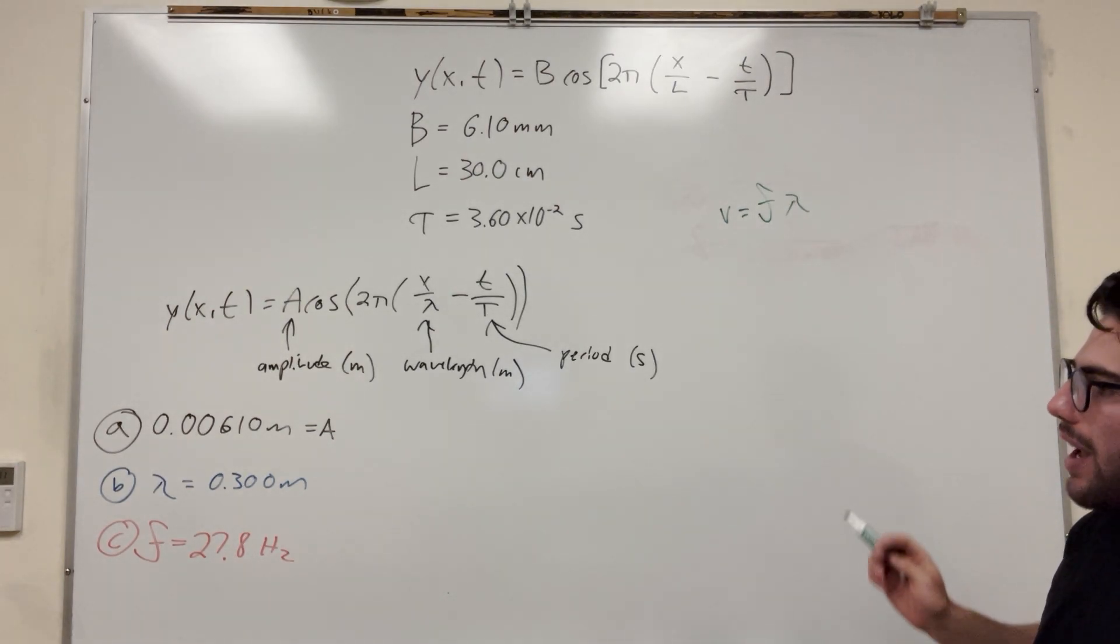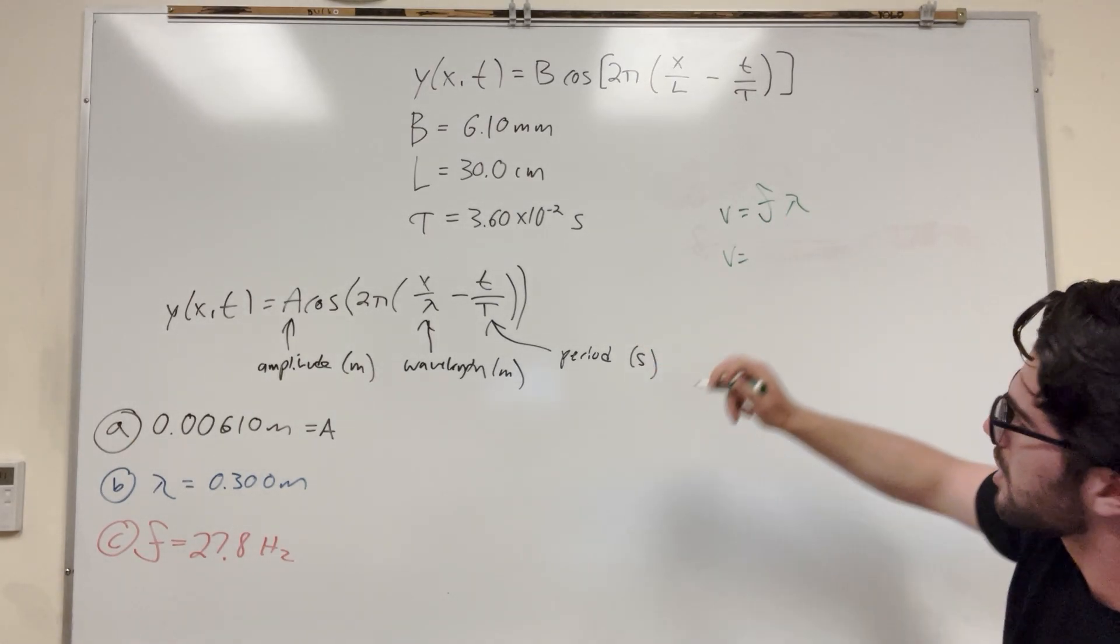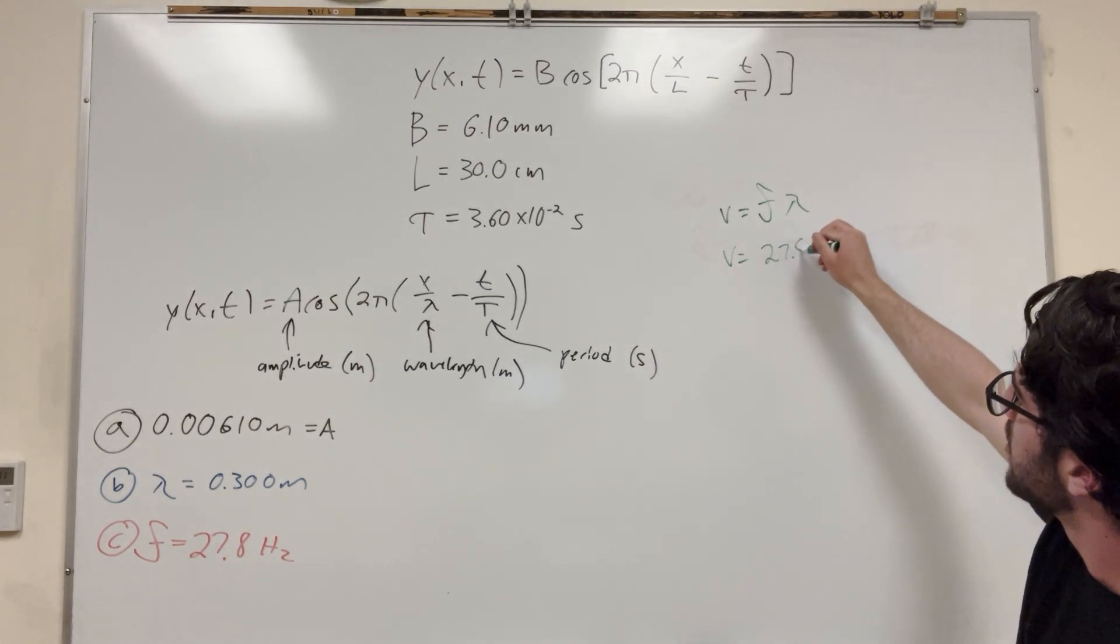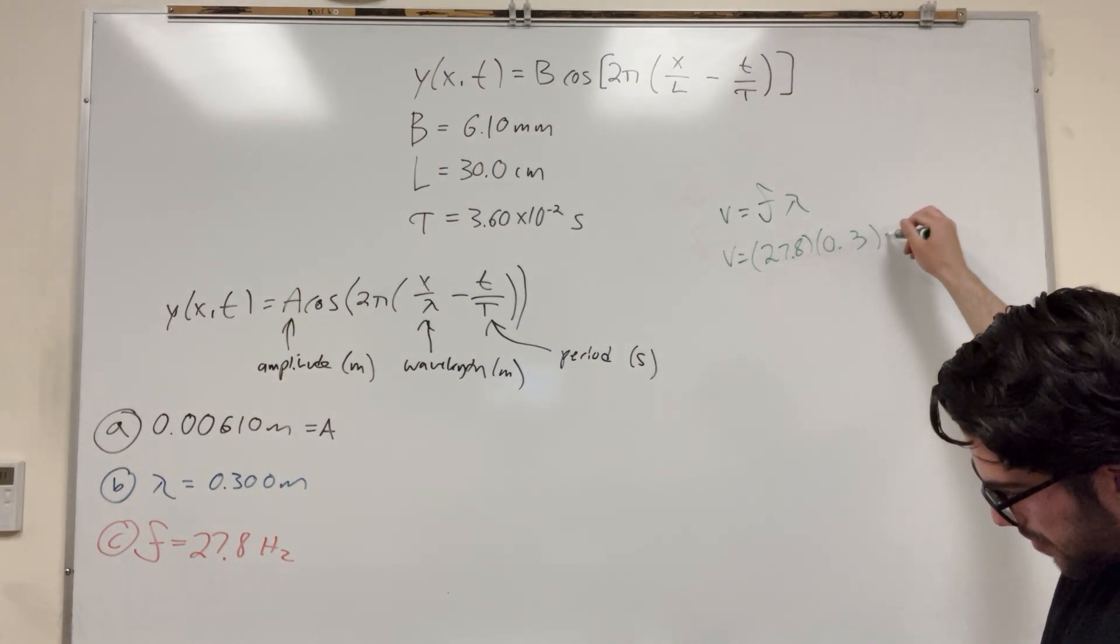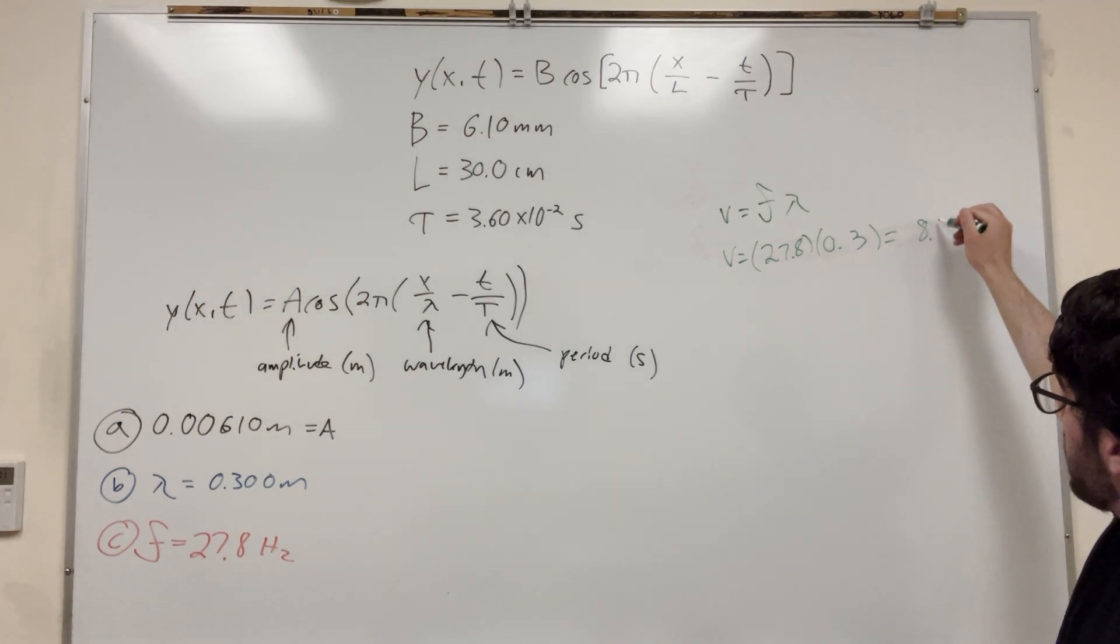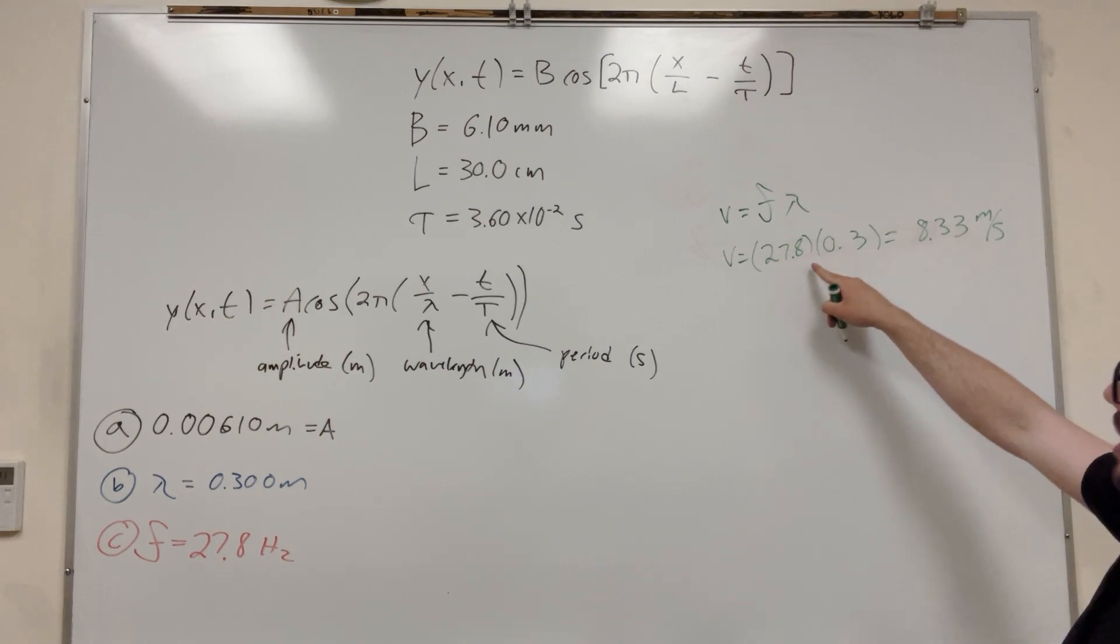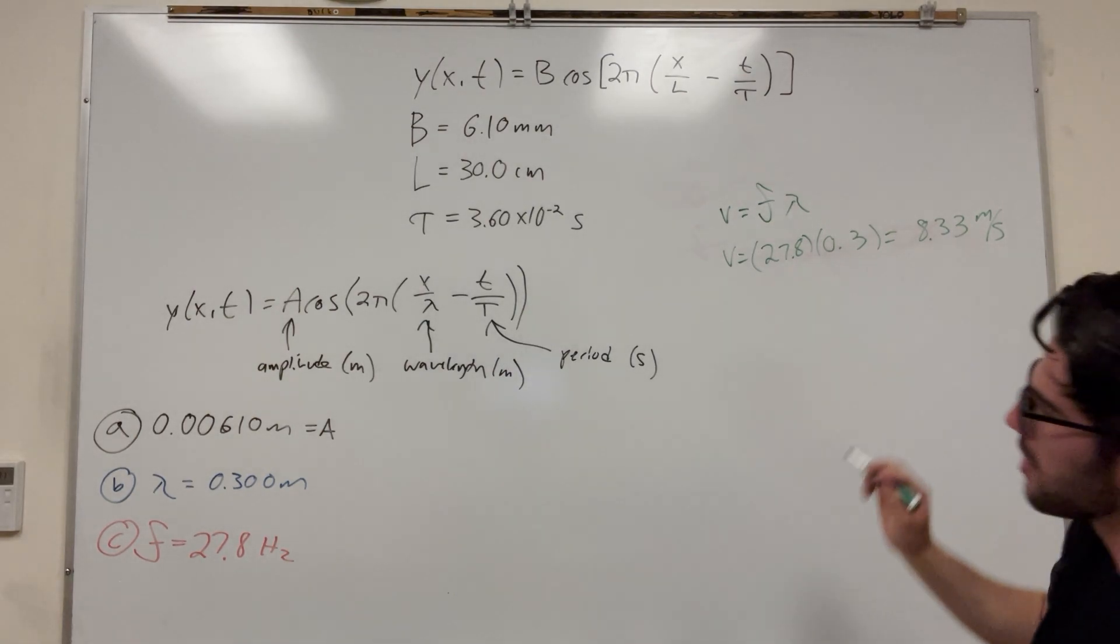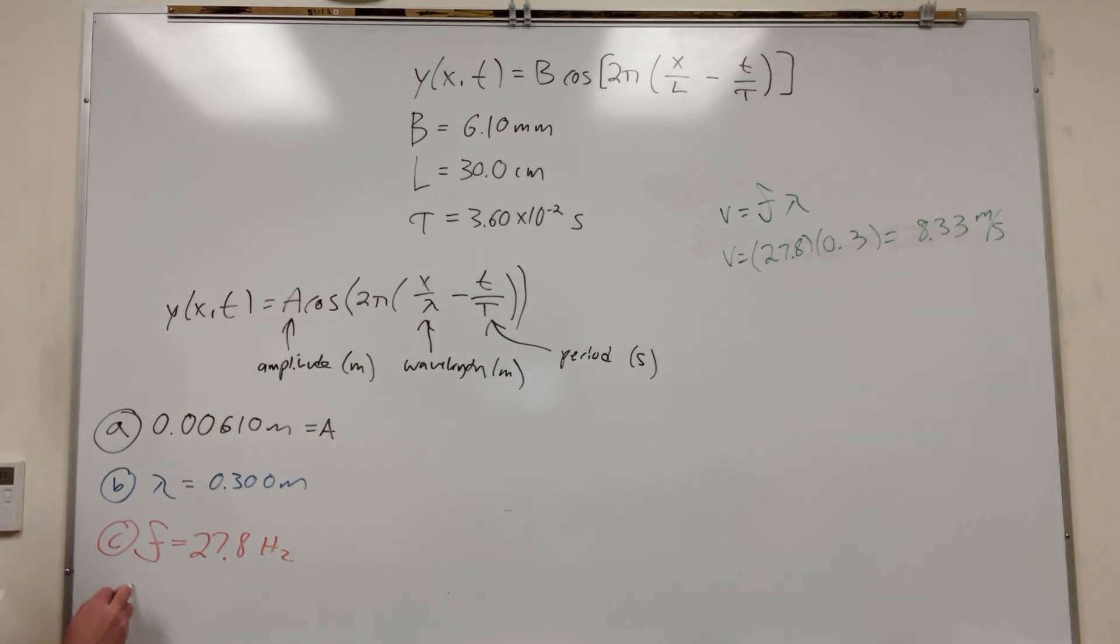So we have these two values, so all we have to do is multiply them by each other. So we found that our frequency is 27.8, and that our lambda, our wavelength, is 0.3. So you multiply these together, you get 8.33 meters per second, which should be the right unit, right? This frequency is 1 over seconds, and then this is meters, so it's meters per second. Makes sense, so let's go ahead and write that over here. V is equal to 8.33 meters per second.